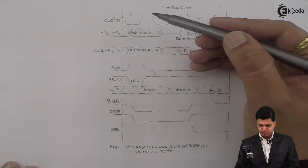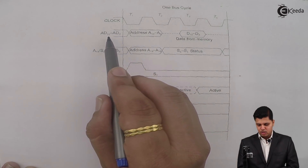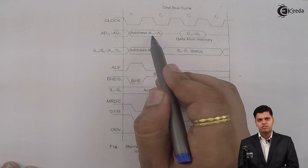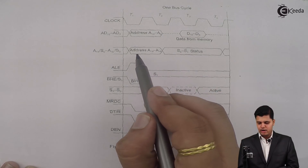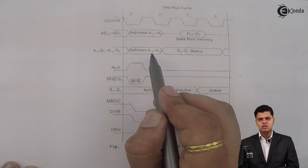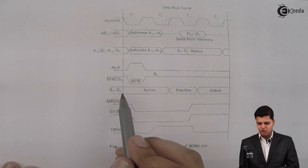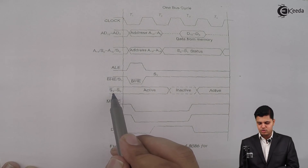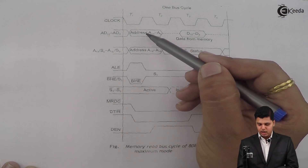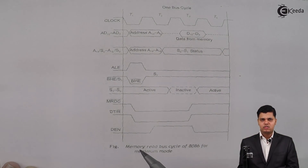In the T1 state, the address is latched onto the external bus. The multiplexed address and data bus carries A0 to A15 in the first T state. Similarly, the address and status multiplexed bus carries A16 to A19 in the T1 state. These are latched using the address latch enable signal, which is the output derived from S0 to S2. The address latch enable becomes 1, so whatever address is sent by the 8086 microprocessor gets latched onto the external latch.